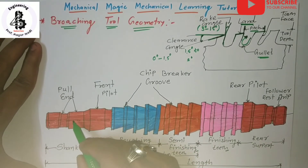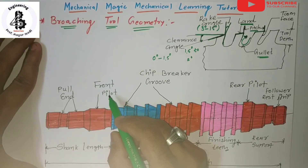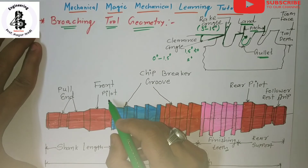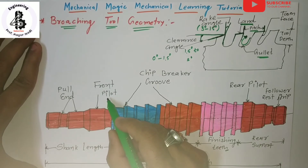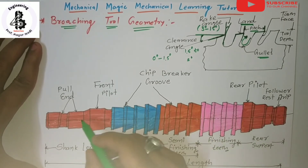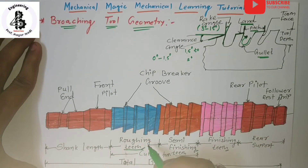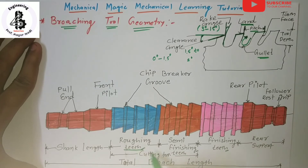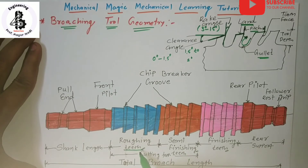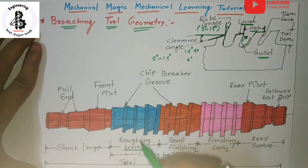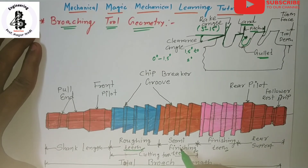After the pull end comes the front pilot. The front pilot is used to guide the broach into the hole and keep it concentric. Then come the roughing teeth and semi-finish teeth, which are both used as cutting teeth. Maximum material removal in broaching is achieved with the roughing teeth as well as the semi-finish teeth.